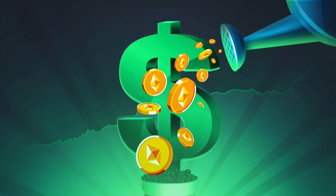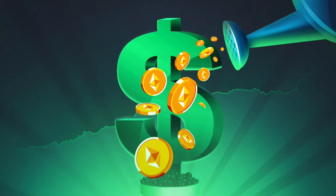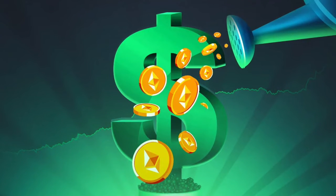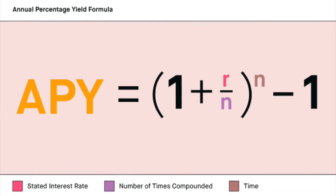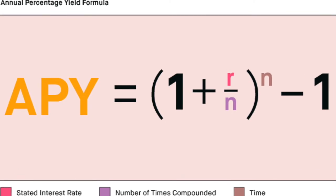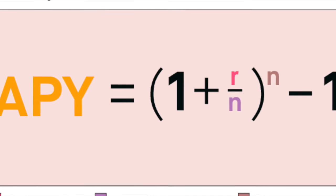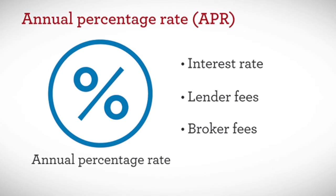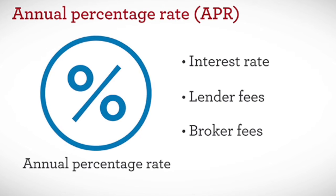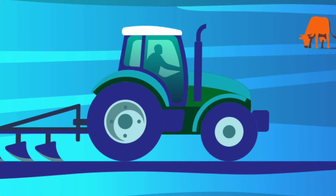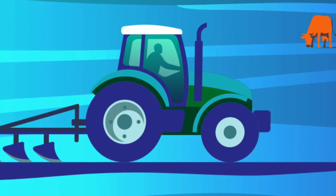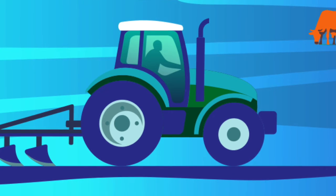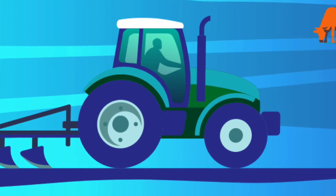Estimated yield returns are calculated on an annualized model, showing possible earnings for locking up your crypto for a year. The most common metrics include Annual Percentage Yield (APY) and Annual Percentage Rate (APR). The primary difference is that APR doesn't consider compound interest, which involves reinvesting profits to increase returns. Most calculation models are simply estimates, as it is difficult to accurately calculate returns in this dynamic market — a strategy could deliver high returns for a while, but if many farmers adopt it, profitability can drop.